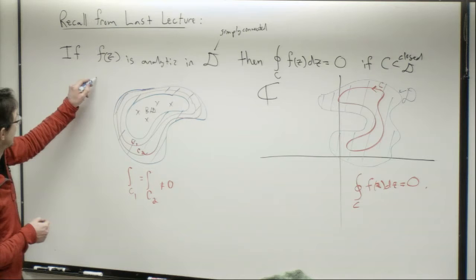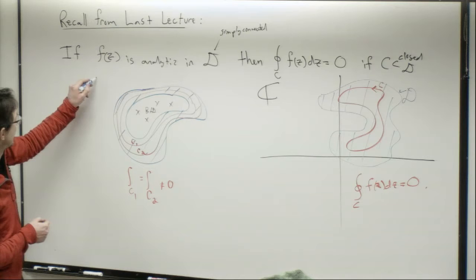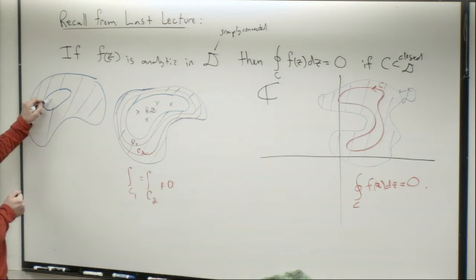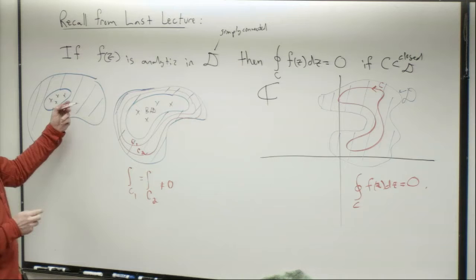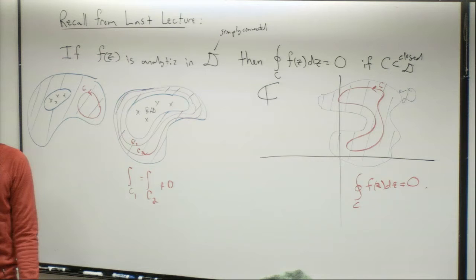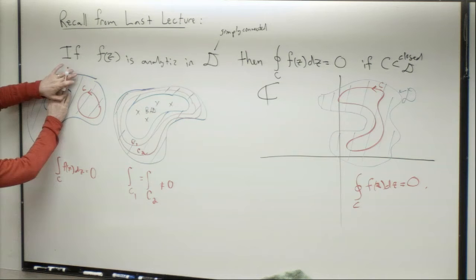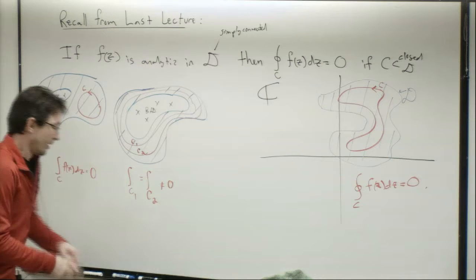Let's test understanding: if we have singularities in the middle but our contour C is entirely in an analytic region away from those singularities, then the integral around C of f(z) dz equals 0 - because it's in a simply connected domain where f is analytic.